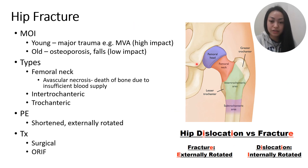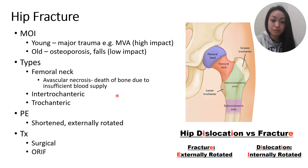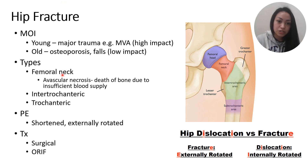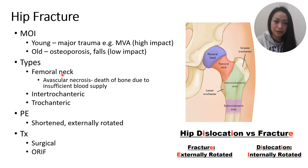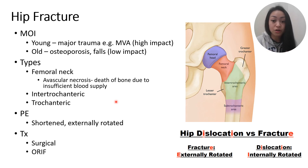For diagnosis, we do an X-ray. For treatment, it's surgical — we perform ORIF: open reduction, internal fixation. Open reduction means the surgeon uses an incision to access the bone and realign the fragments so they heal properly. Internal fixation refers to piecing the bone fragments together with hardware like pins, plates, rods, screws, or a combination of these.